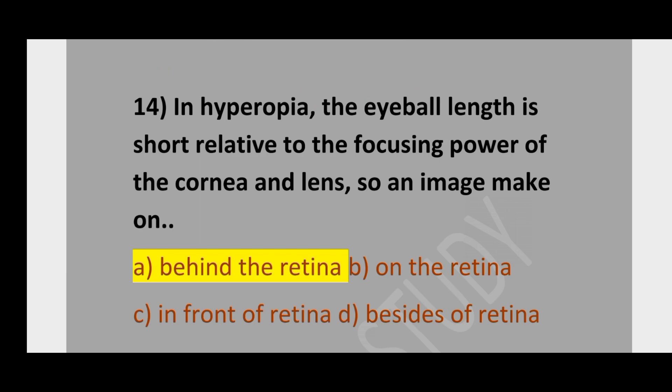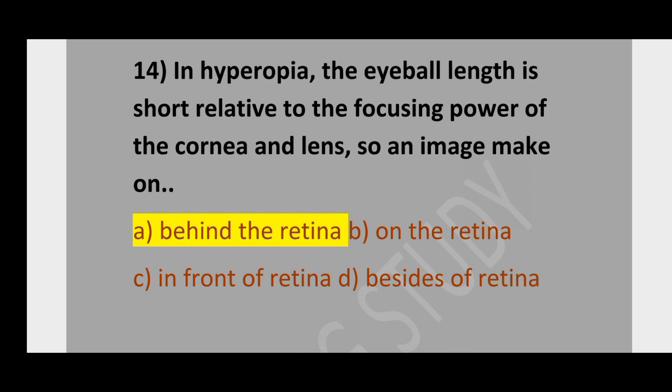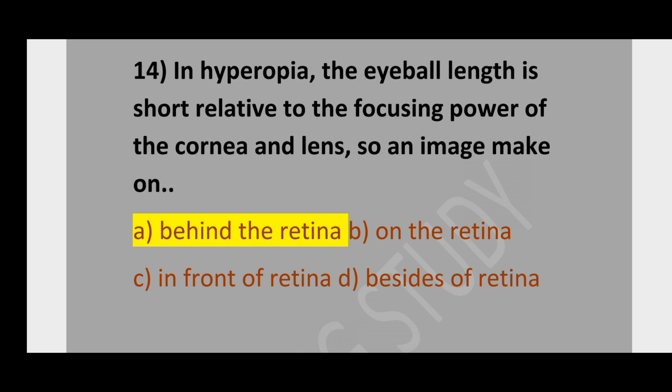Question number 14. In hyperopia, the eyeball length is short relative to the focusing power of the cornea and lens, so an image is made: option A, behind the retina; option B, on the retina; option C, in front of the retina; option D, beside the retina. The correct option is option A, behind the retina.